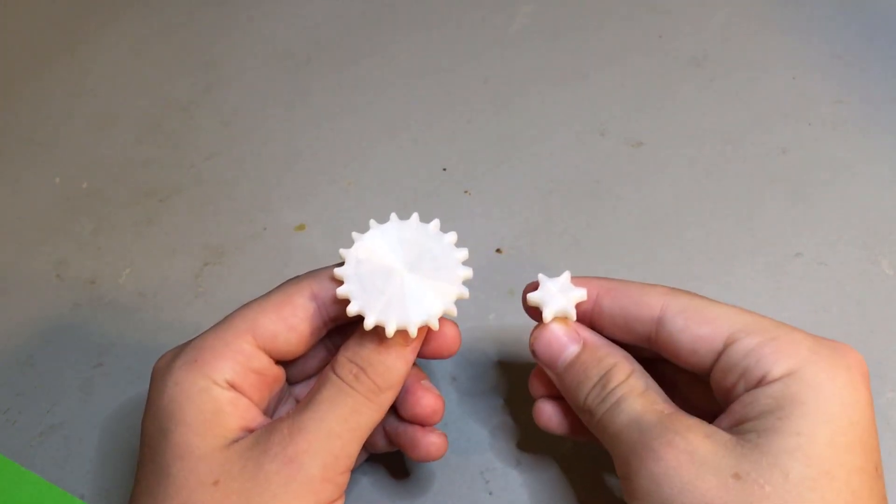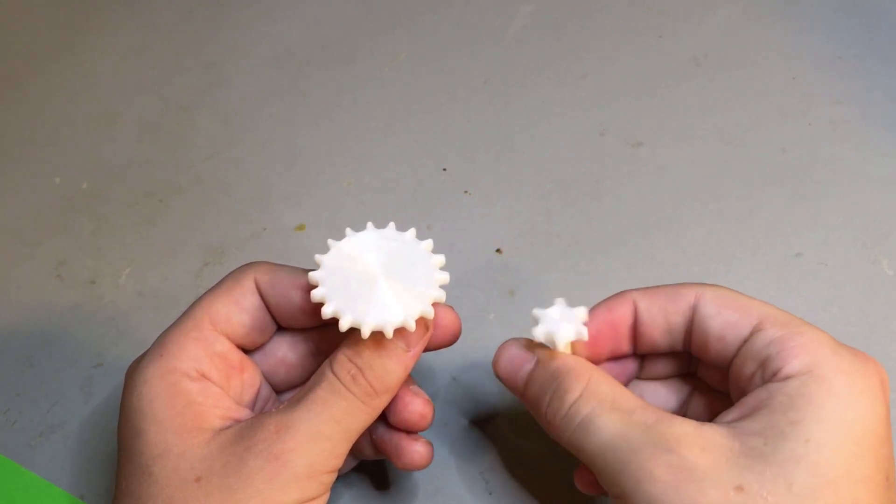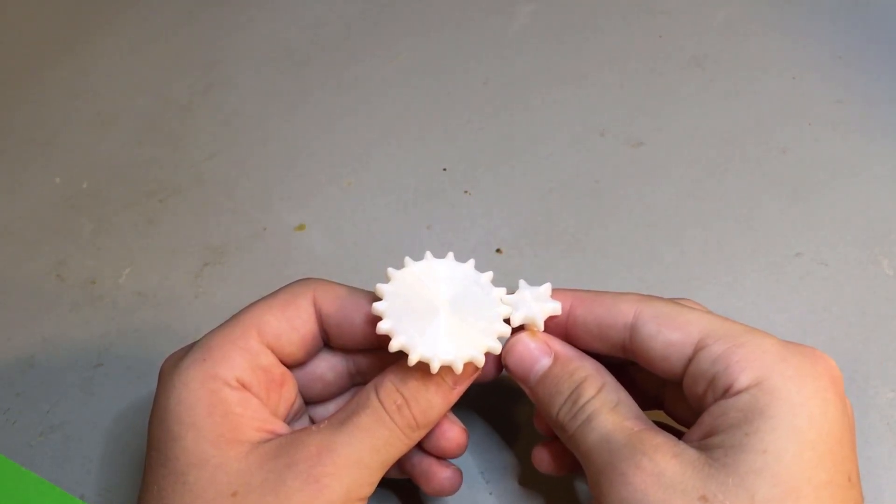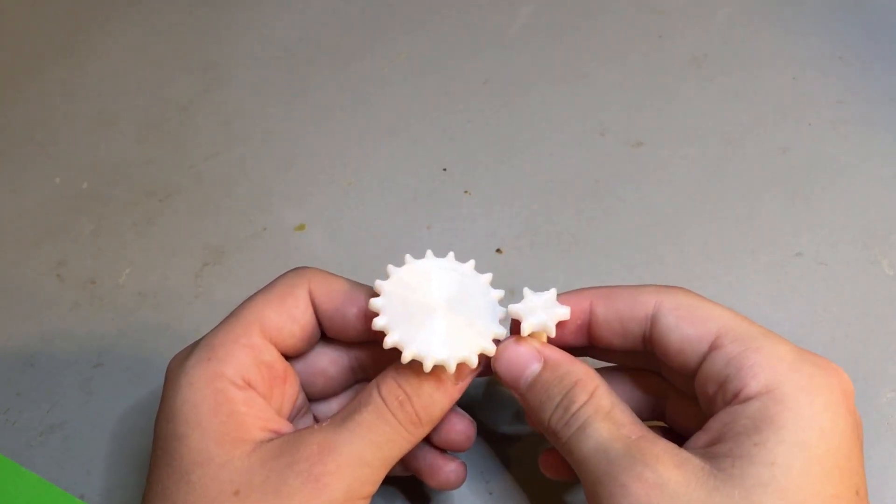Every rotation of the large gear will cause the smaller gear to rotate 3 times. Now, this large gear ratio has less torque than before, but now it is much faster.